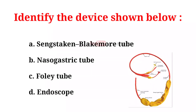Identify the device shown below. A. Sengstaken-Blakemore Tube. B. Nasogastric Tube. C. Foley Tube. D. Endoscope. And the correct answer is...